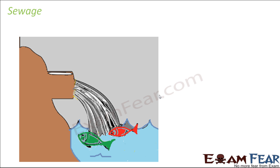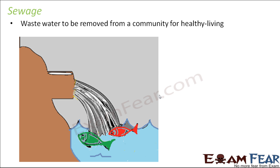The first thing we will discuss is sewage. Sewage is the waste water that needs to be removed from a community for healthy living. This waste water comes out of each of our houses on a daily basis and needs to be removed out of the community. Is it wise to directly dispose it into a river? Not at all, because even if we send it to that river, directly or indirectly that river water will come back to us for drinking purposes.